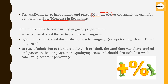Coming over to Language programs — if you want to take Honors in a language, you will get a benefit of 2% for having studied that particular elective language. This does not apply to Hindi or English. For example, if you want to take Honors in Punjabi and you have studied Punjabi at your Plus 2 level, you will get a benefit of 2%.